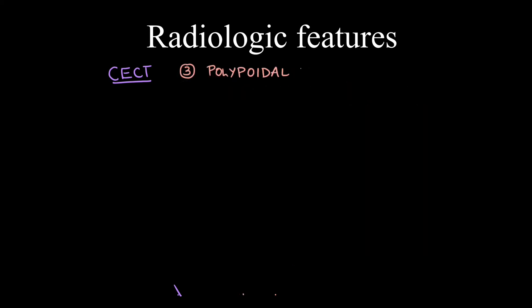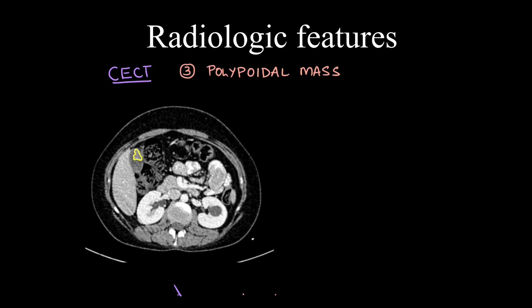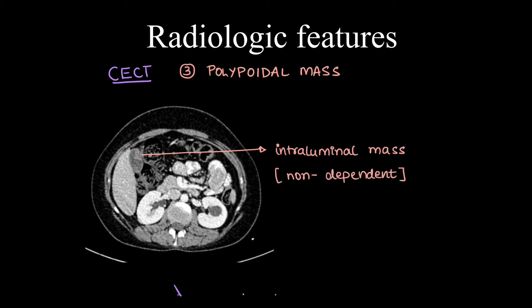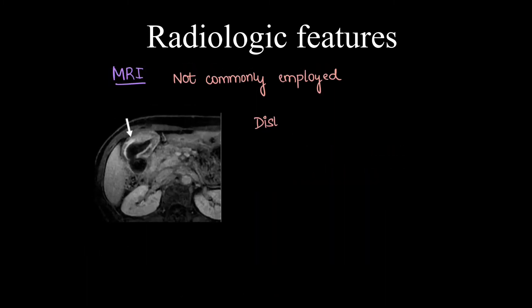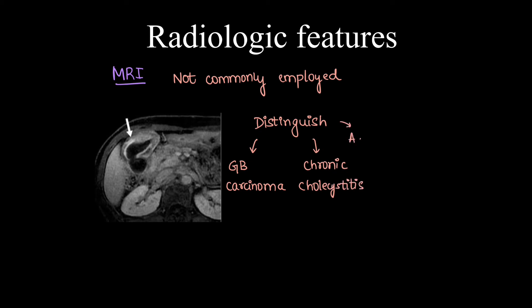The third type is the polypoid mass type, which presents as a luminal mass that is non-dependent. Don't confuse it with sludge, which is usually in dependent positions. MRI is not commonly used as the modality of choice, but in cases presenting as diffuse wall thickening, MRI can be used to differentiate GB carcinoma from chronic cholecystitis and adenomyomatosis.